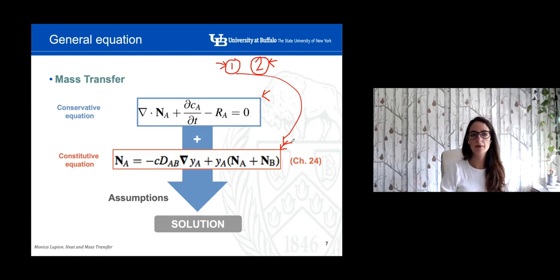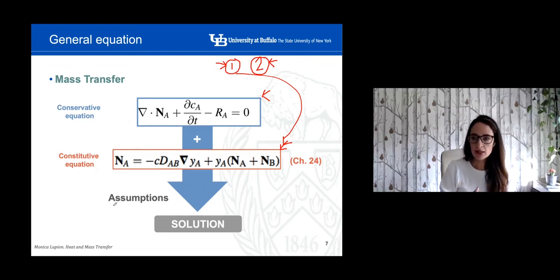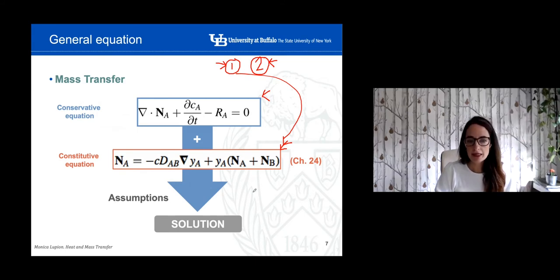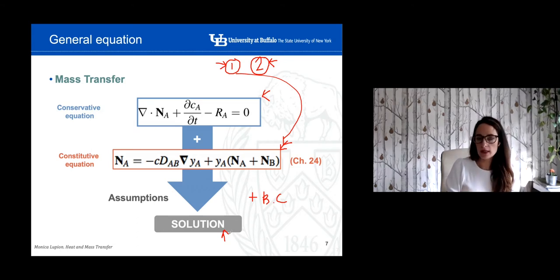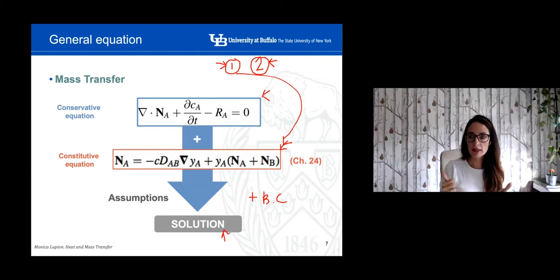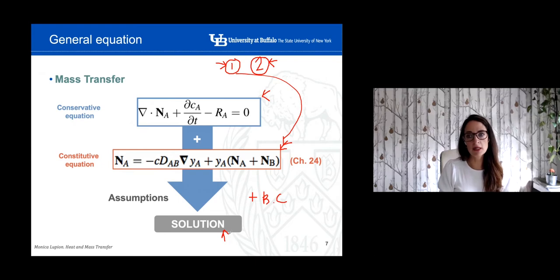When we combine the conservation equation (the general equation) and the Fick rate equation — also called the constitutive equation — we're going to try to simplify these equations further so that the mathematical solution will be easier, along with the boundary conditions. We're going to get to the solution of the mass transfer approach using the same methodology always: combining the general equation and the Fick rate equation, applying simplifications and assumptions, applying boundary conditions and sometimes initial conditions if there is dependence with time, in order to reach a solution.